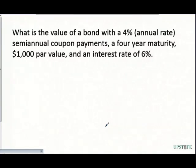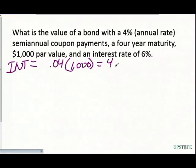We have to find out first what that interest payment is, what this INT is. That interest payment is the 4%, so it's 0.04 multiplied by our face value of $1,000. This tells us we have an annual interest payment of $40.